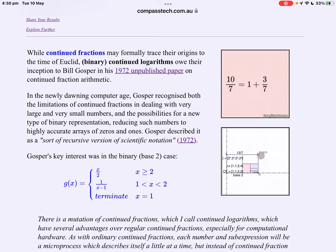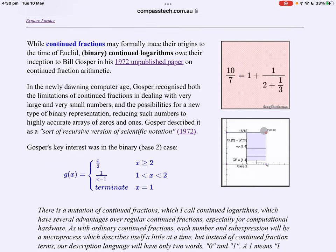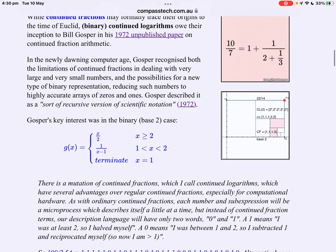Gosper realized that continued fractions are a wonderful tool for approximation and for gaining deep insights into the very nature of numbers both rational and irrational. But they fall short when dealing with very large and very small numbers.